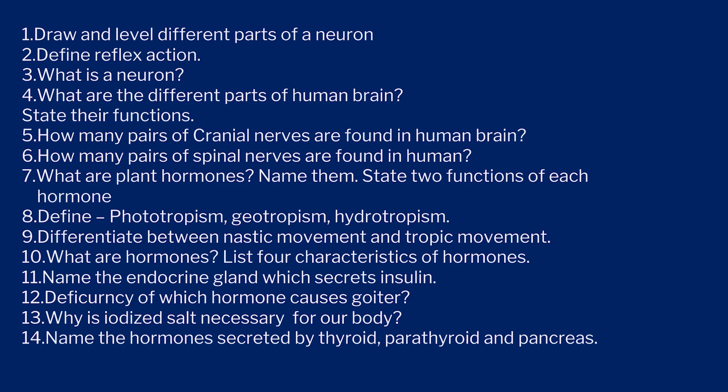What are hormones? State four characteristics of hormones. Name the endocrine glands which secrete insulin. The deficiency of this hormone causes goiter. Why is iodized salt necessary for our body? Name the hormone secreted by thyroid, parathyroid, and pancreas.